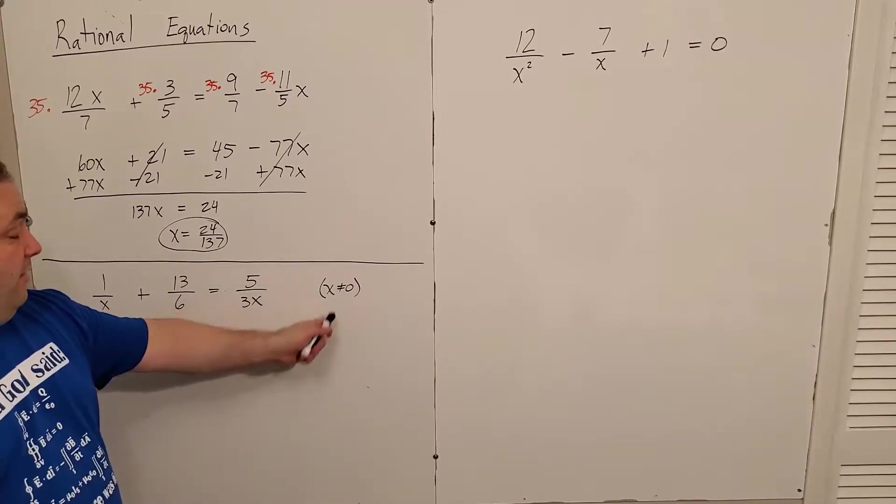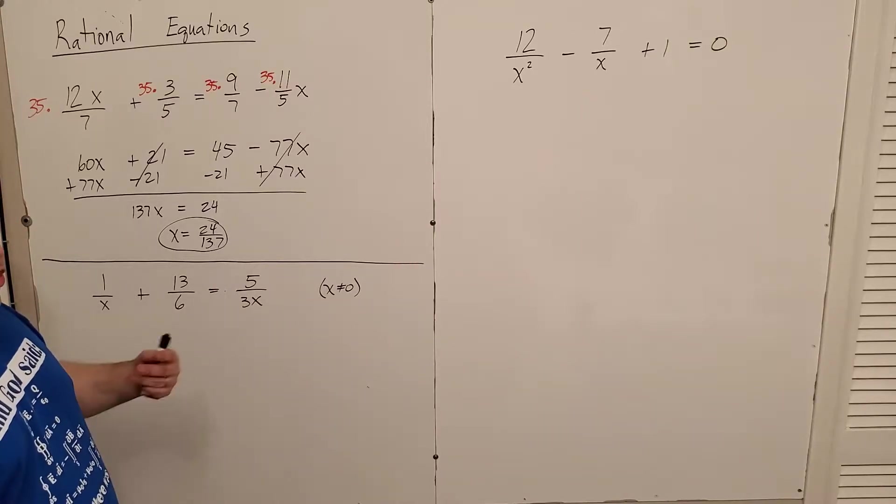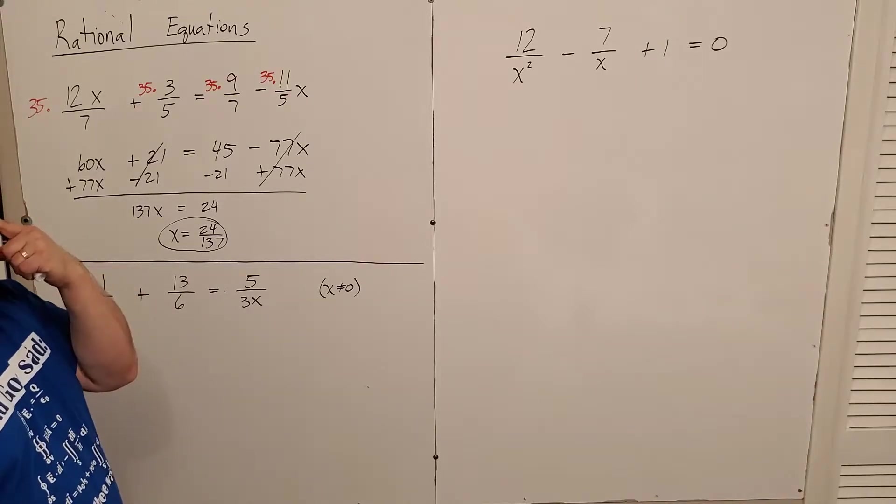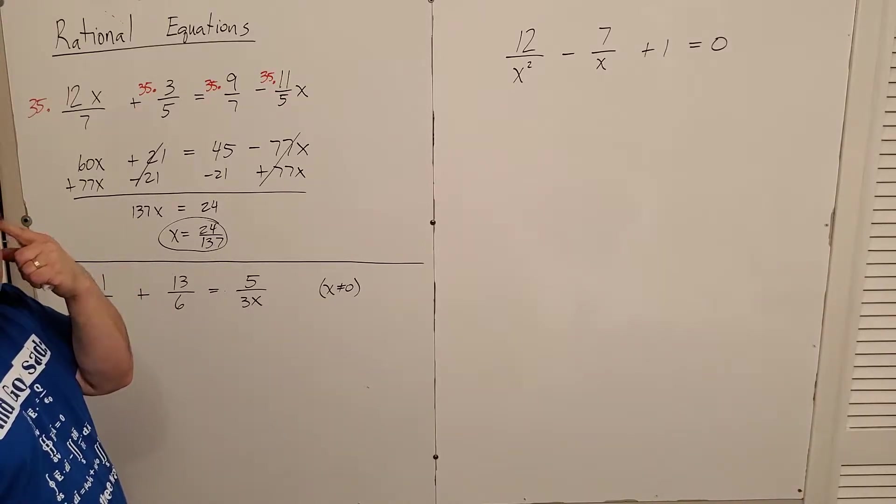So I kind of label that for myself so I remember for later, just in case that value comes up as a solution. And I need to tell myself, oh wait, no, I can't use that one anyway.